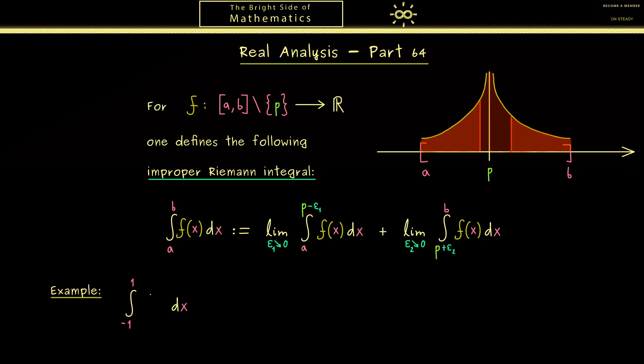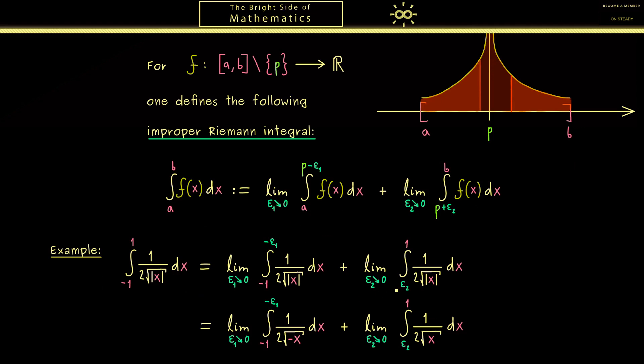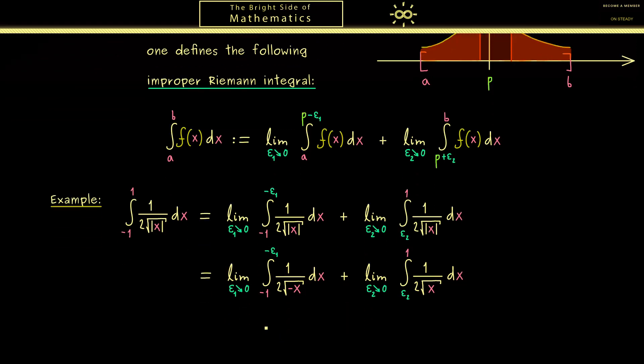So let's calculate the integral from minus 1 to 1 of the function 1 divided by 2 times the square root of the absolute value of x. So this is a well-defined function on the interval minus 1 to 1 with the exception of the origin, which means the function is not defined at 0. However, maybe the two limits here exist, and then we know the improper Riemann integral also exists. Therefore, just let's copy the two limits here, but now it's easier because p is equal to 0. And now you should see because of this splitting here we can get rid of the absolute value. This simply means that for the positive part we don't need it at all, and for the negative part we can put a minus sign in front of x.